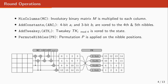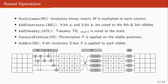The fourth operation is PermuteNibbles, which using a permutation P changes the position of the nibbles in the state. The last and only non-linear operation is the SubBox layer, where an involutive S-box is applied to each of the nibbles. Note that in the last round only the first three operations are included.